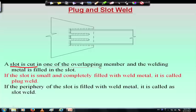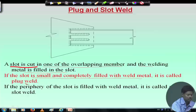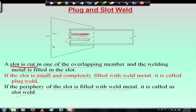A slot is cut in one of the overlapping members and the weld metal is filled in the slot. When the slot is small and completely filled with weld metal, it is called a plug weld. If only the periphery of the slot is filled with weld metal, it is called a slot weld. This is the difference between slot weld and plug weld.